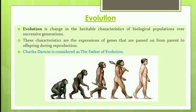The next feature is evolution, which is the change in the heritable characteristics of biological populations over successive generations. This is a long-term process. These characteristics are expressions of genes passed from parent to offspring during reproduction. Charles Darwin is considered the father of evolution.